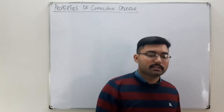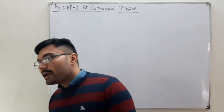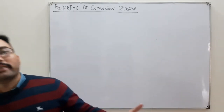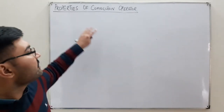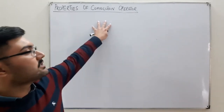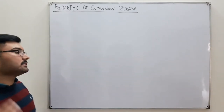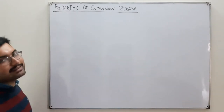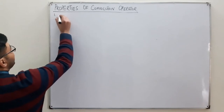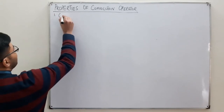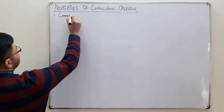Bismillahirrahmanirrahim, Assalamu Alaikum. Salah Khan here. Today, before moving into the properties of LTI systems, we have the properties of the convolution operator — basically three: the simpler, the basic, the well-known. The first of them is the commutative property.